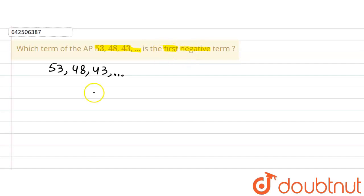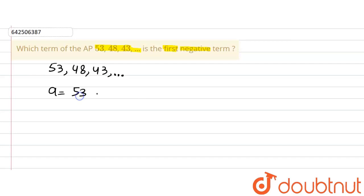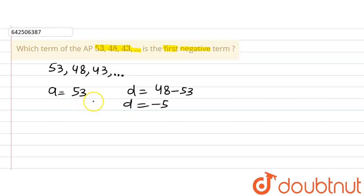First, let us find out which number term is negative. We write down the first term: A is equal to 53. And the common difference D is equal to the second term minus the first term, which is 48 minus 53, so D equals minus 5.